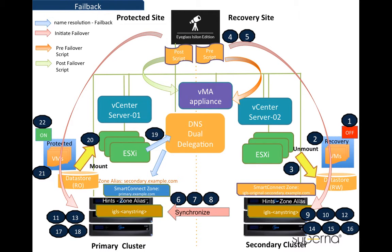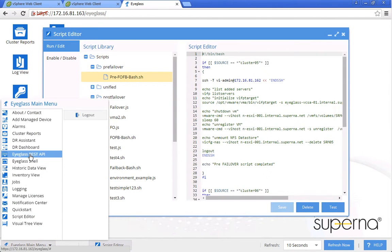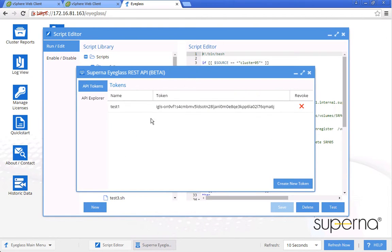The next diagram is for the failback process. You can see here that the processes are similar to the failover processes, but now in reverse direction. Now we will run a demo. We can see from this window that we have created an API token for EyeGlass. This API key will be used as the token header for our CURL commands.